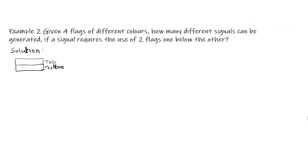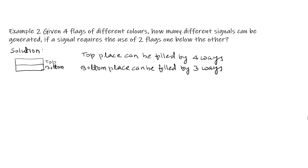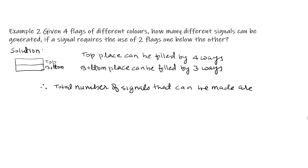One flag can be used in the top box and the other at the bottom. The top place can be filled in 4 ways, as there are four flags. After filling the top place, there will be three flags remaining, so the bottom place can be filled by any of the three flags — in 3 ways. Therefore, the total number of signals that can be made are 4 × 3 = 12 signals.